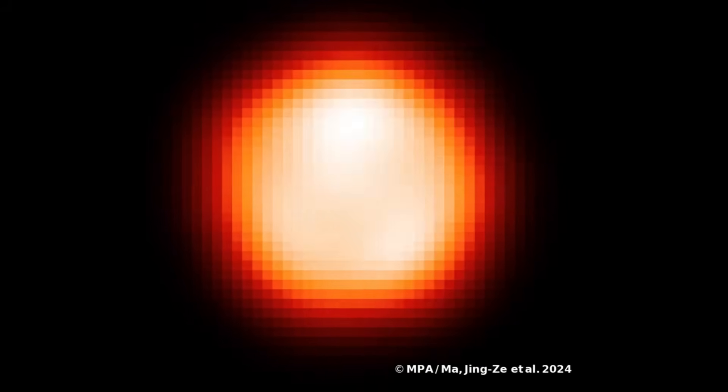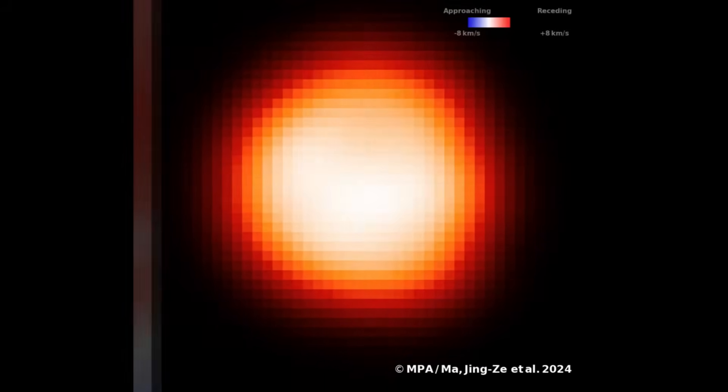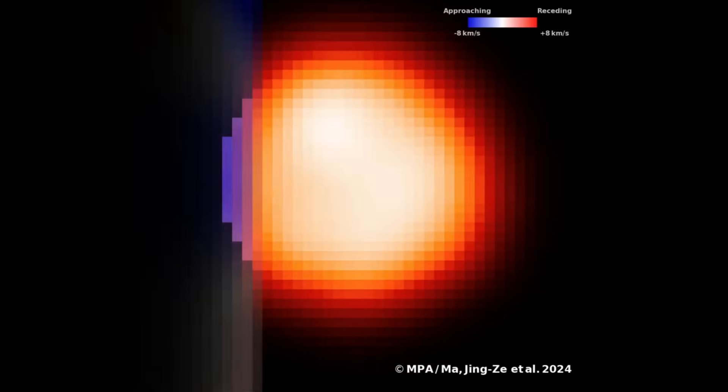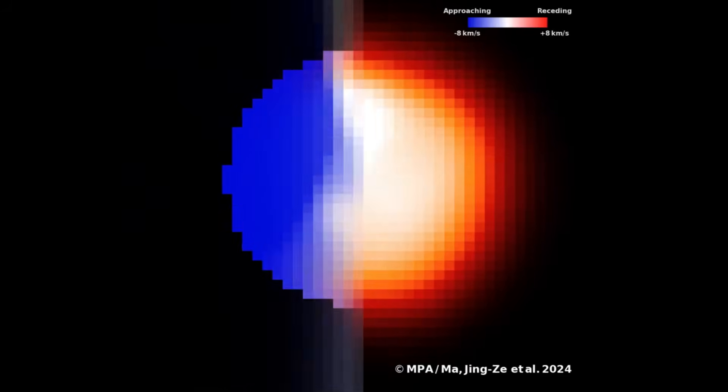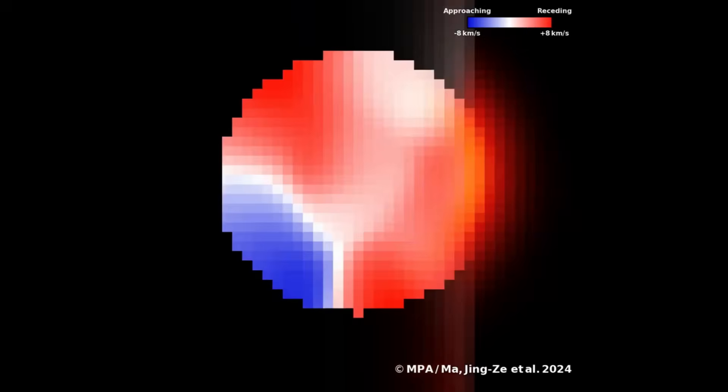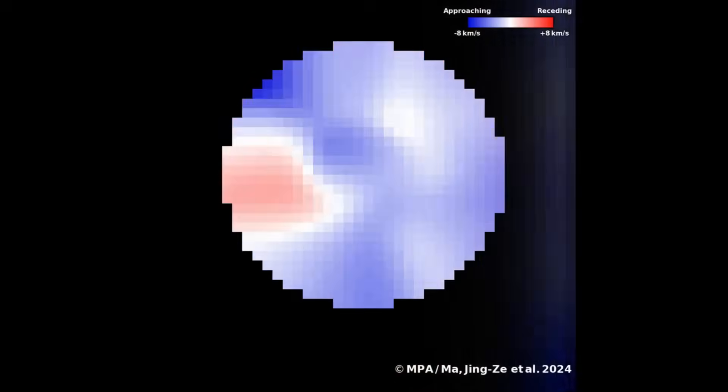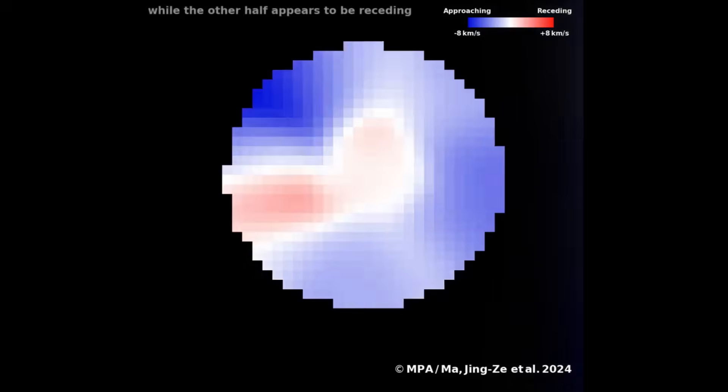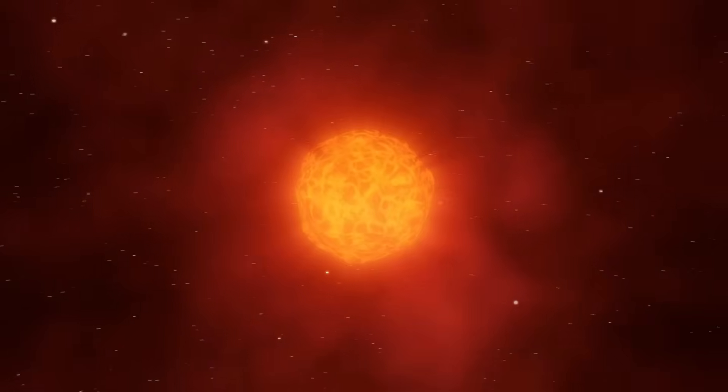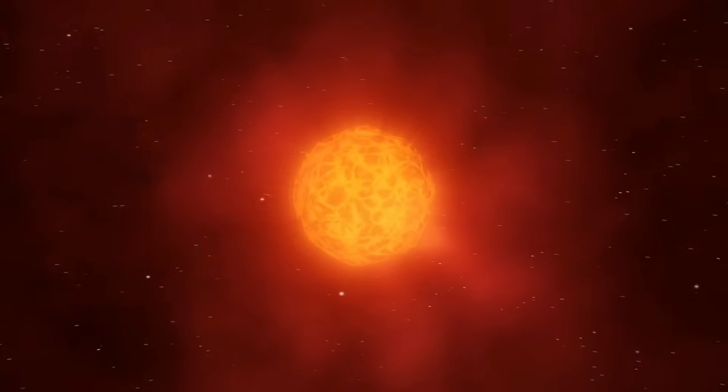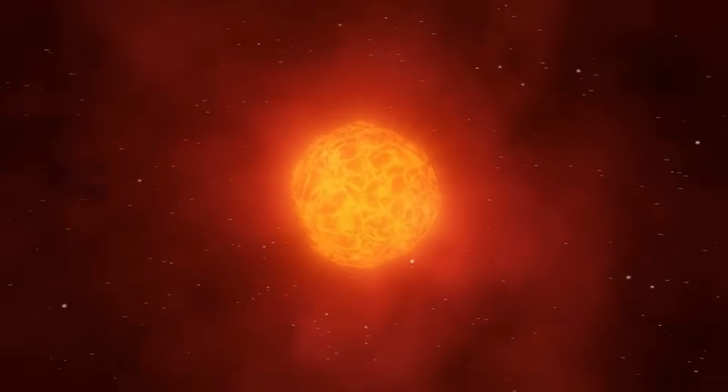Similarly, for Betelgeuse, one half of the star's surface is moving towards us, while the other half moves away, creating a gradient of color shifts. By observing these shifts, scientists can determine the star's rotational speed. For Betelgeuse, this speed was found to be much higher than expected. And scientists now know why.